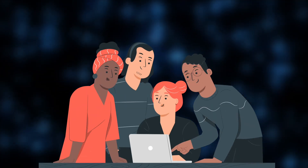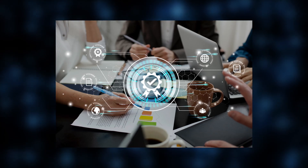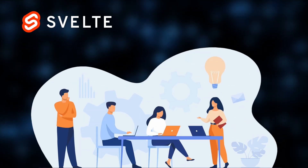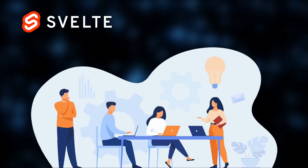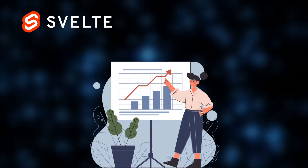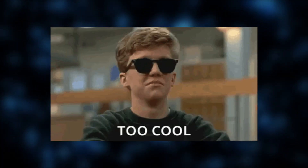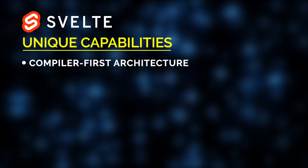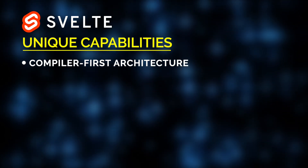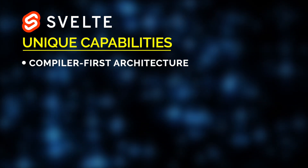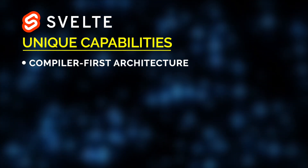Before we move on to the projects, let's have a quick look at Svelte and Solid's unique capabilities. Here's what Jelvix experts pinpoint about Svelte 5. Svelte stands out as a framework that puts performance first — not by optimizing runtime execution, but by eliminating the runtime almost entirely. Thanks to its compiler-first architecture, Svelte 5 transforms components into pure HTML, CSS, and JavaScript at build time, leaving no framework overhead in the browser.